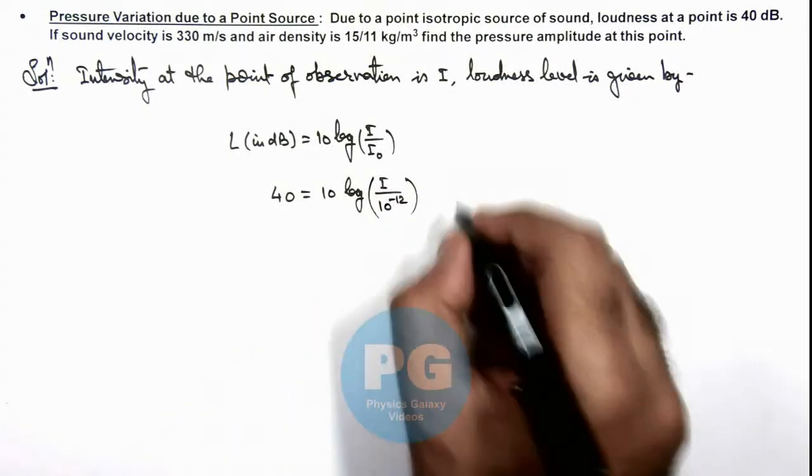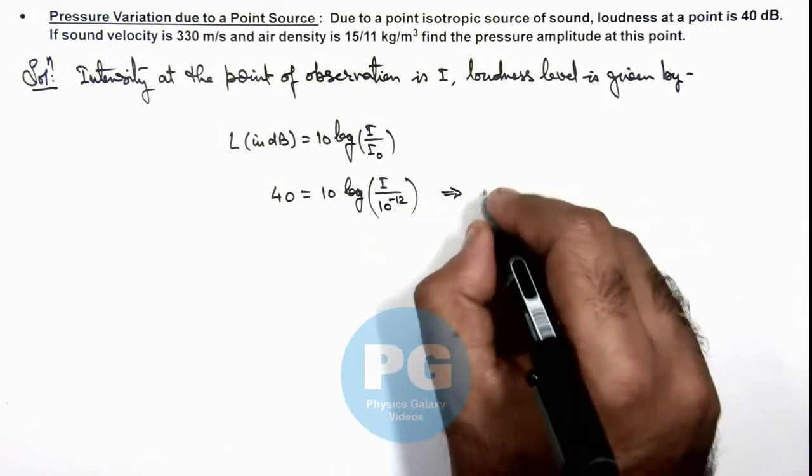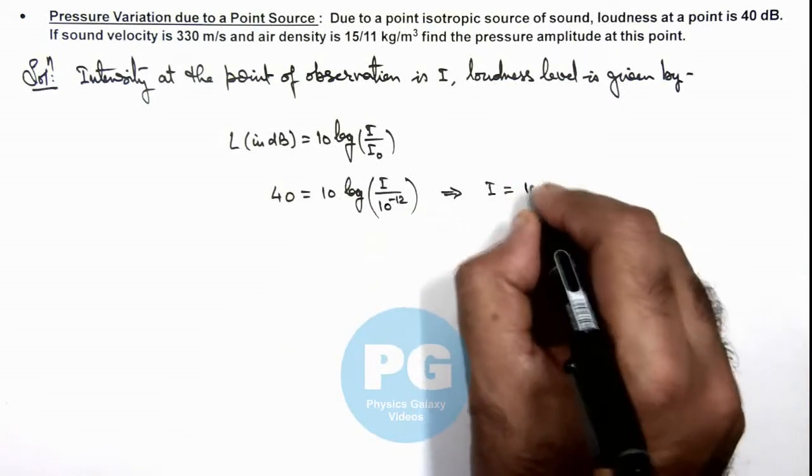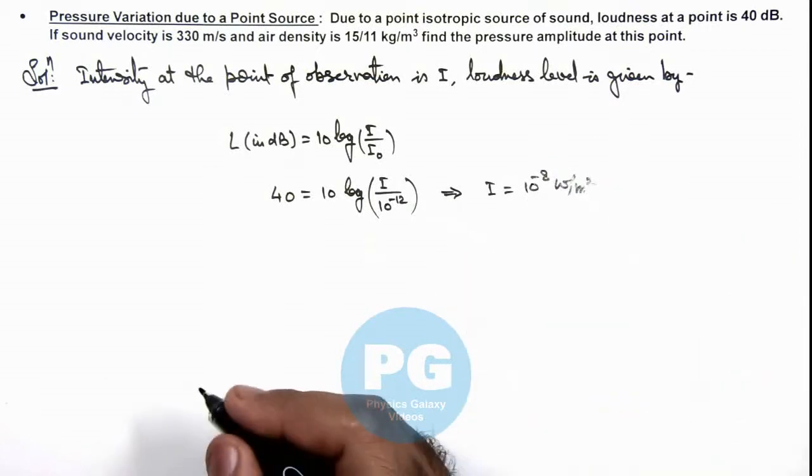If we simplify this term by taking antilog, then it gives us the value of I is equal to 10 to power minus 8 watt per meter square.